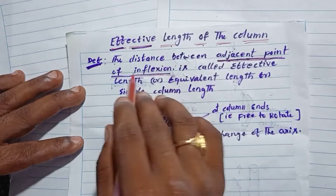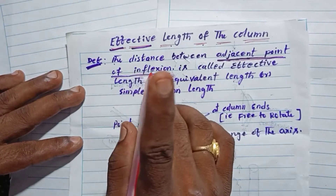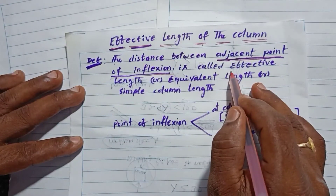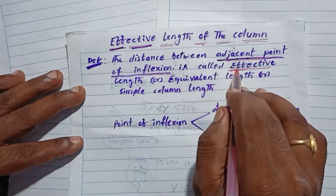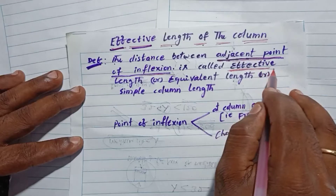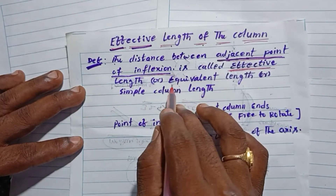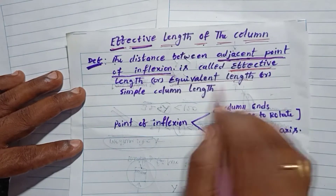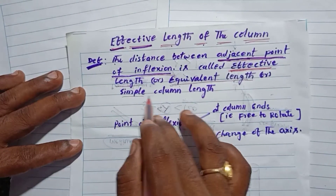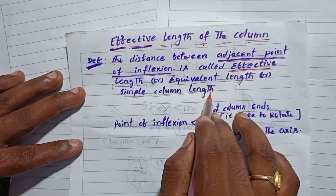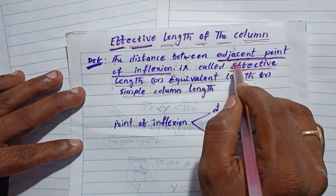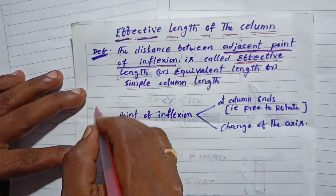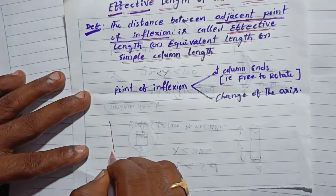Effective length carries the same meaning as 'simple column length.' This effective length concept tells us what condition the column is fixed under.